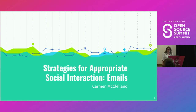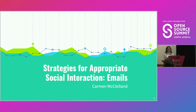Another thing that falls under my scope of practice is appropriate communication and social interaction, because that's kind of the root of a lot of things. Children, some with autism, don't know how to appropriately interact, and then a lot of adults with traumatic brain injuries have to relearn and be retaught it. So I'm going to tell you guys about different strategies for appropriate communication via email.